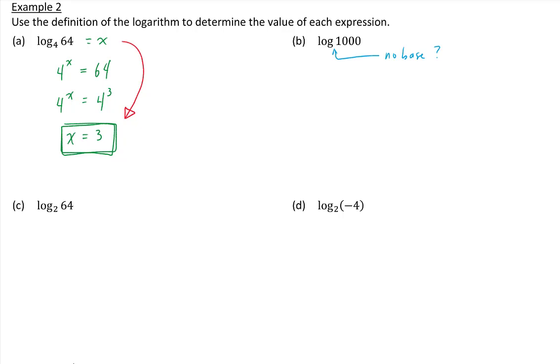If you do not see a base then the base is 10. Same as the last one, we are saying what exponent x on 10, since the base is 10, is going to equal 1000. We can rewrite 1000 as 10 to the exponent 3, which tells us that x is equal to 3.